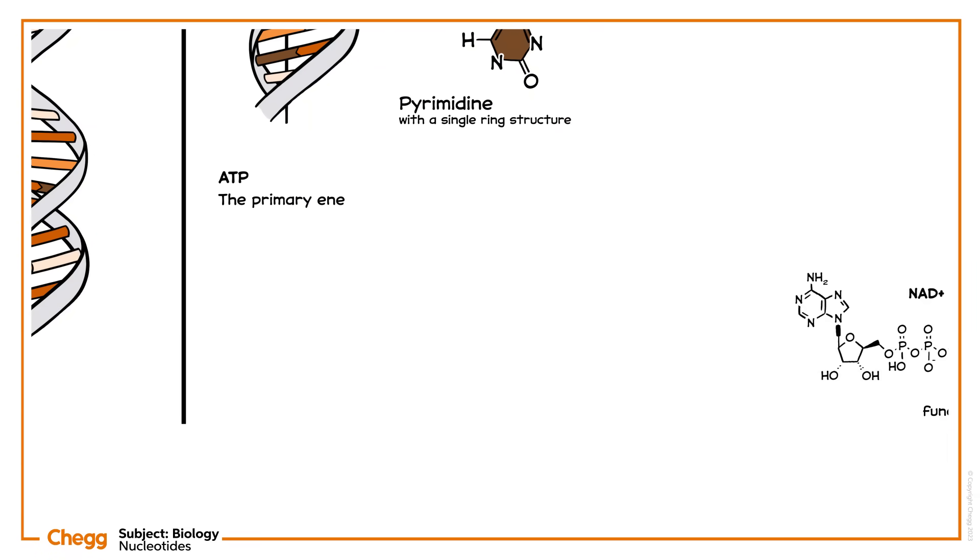ATP is the primary energy molecule of the cell. It stores energy in its bonds, which it can release by expelling a phosphate group to fuel other cellular processes.